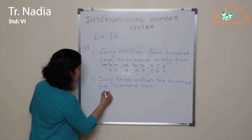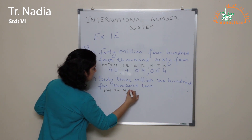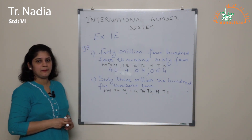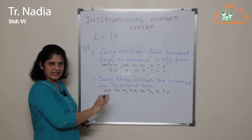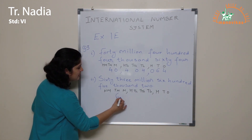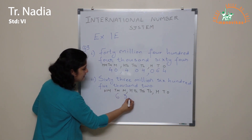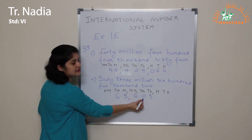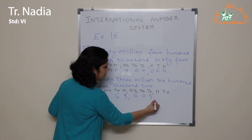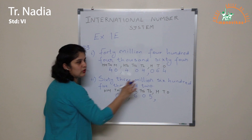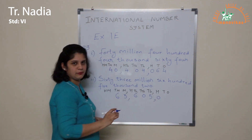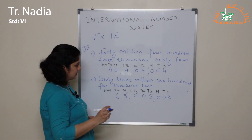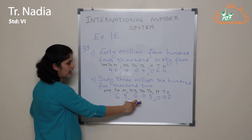Let's go to the next example. We have 63 million — 6 in the 10 million place and 3 in the million place; the 100 million place is left blank. Then 605 thousand: 6 in the 100 thousand place, 0 in the 10 thousand place, and 5 in the thousand place. Then just 2 in the ones period: the hundreds and tens places get a 0 each, so it is 002. This number is written as 63,605,002.